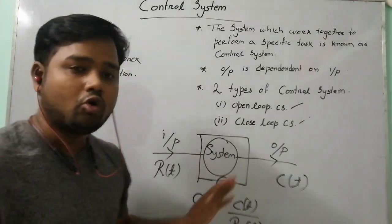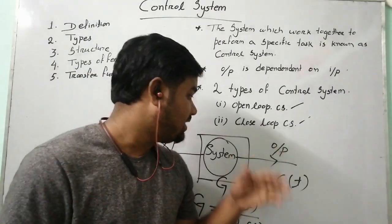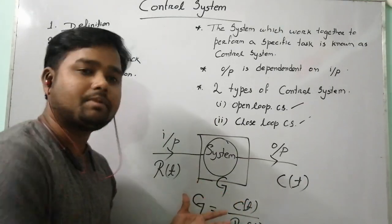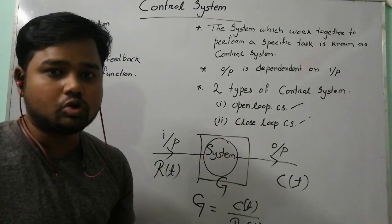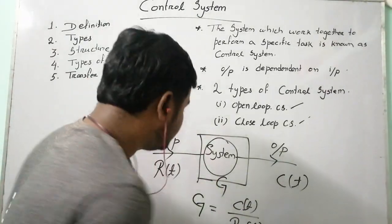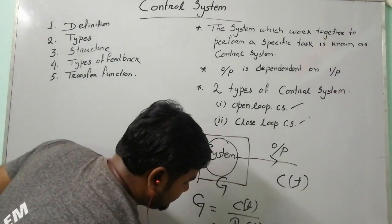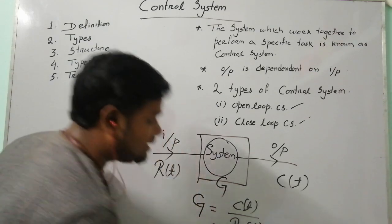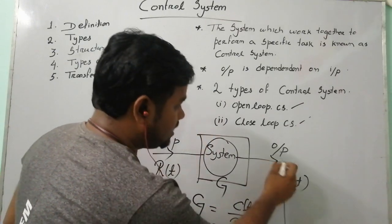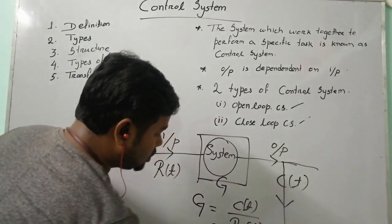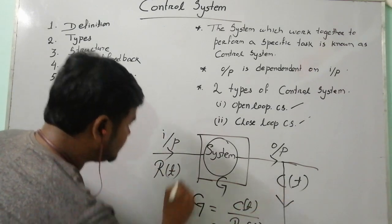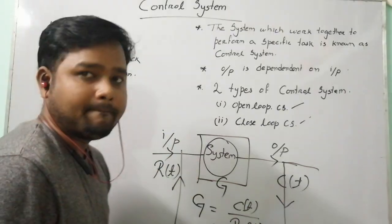This is an open loop control system. The next step beyond the open loop control system is the closed loop control system. In the closed loop control system, one extra part is added, which is a feedback path. Feedback means the part of the output that comes back towards the input — that is known as the feedback.